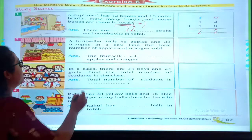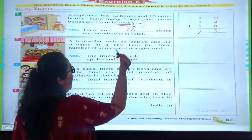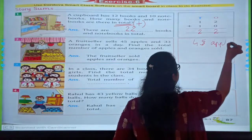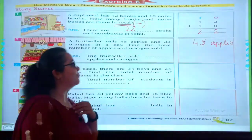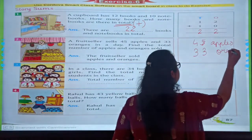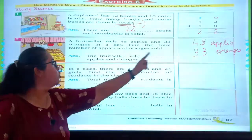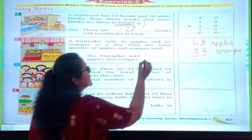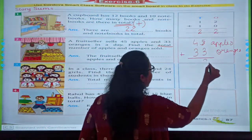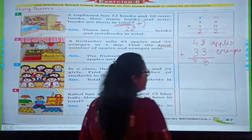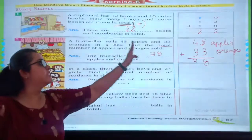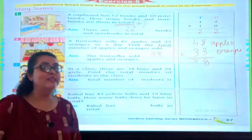2 plus 0 is 2. 1 plus 1 is 2. So I can say that 22 books are there in total. Let's read the second one. A food seller sells 45 apples and 33 oranges. Find the total number of apples and oranges. So we are supposed to add it. 5 plus 3 is 8. 4 plus 3 is 7. So I can say that in all, the food seller sold 78 apples and oranges.